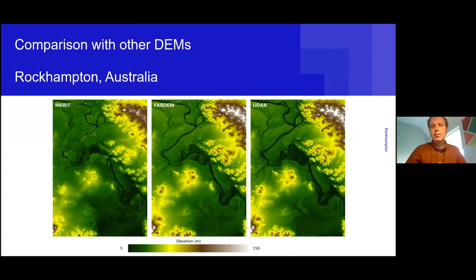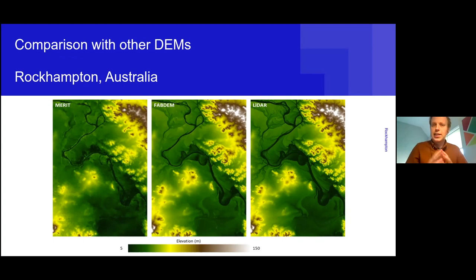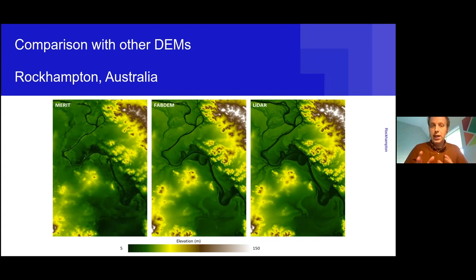Here is an example from Wollongong/Campbelltown in Australia. On the left is the MERIT DEM — currently the best global digital terrain model, based on SRTM with trees removed. On the right is LiDAR — the absolute best elevation data, but available for less than 1% of the globe. In the middle is FAB DEM, which picks up many of the features you would see in LiDAR.